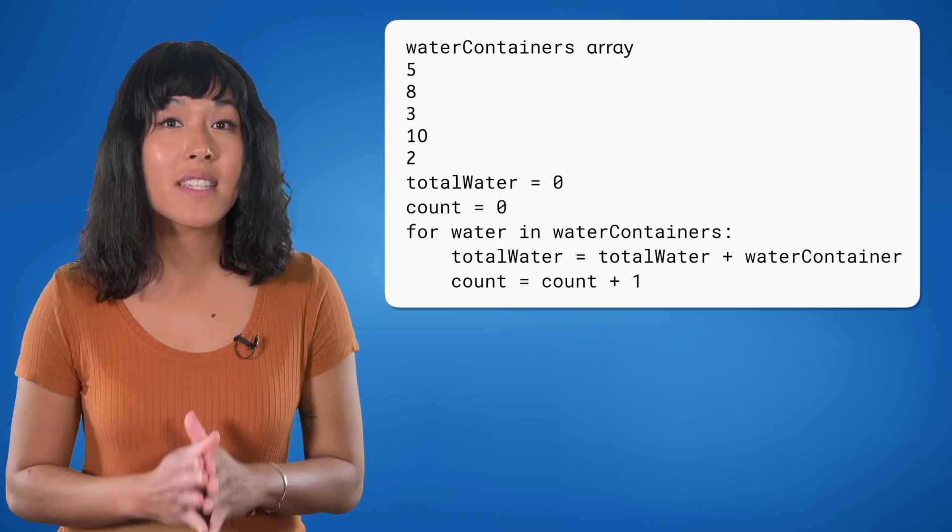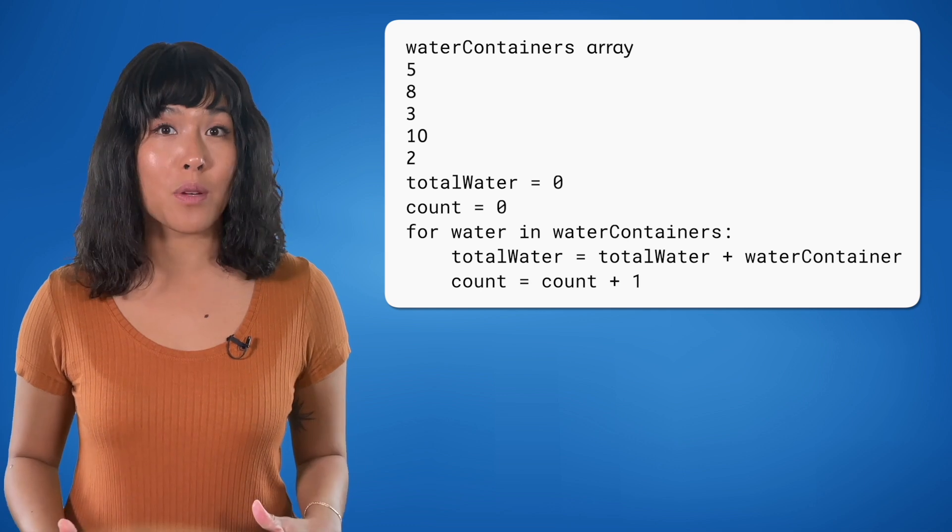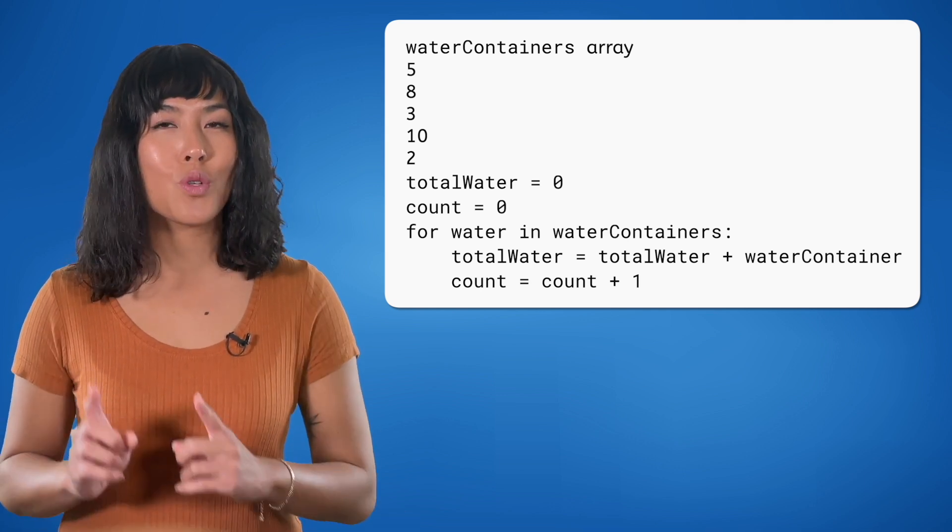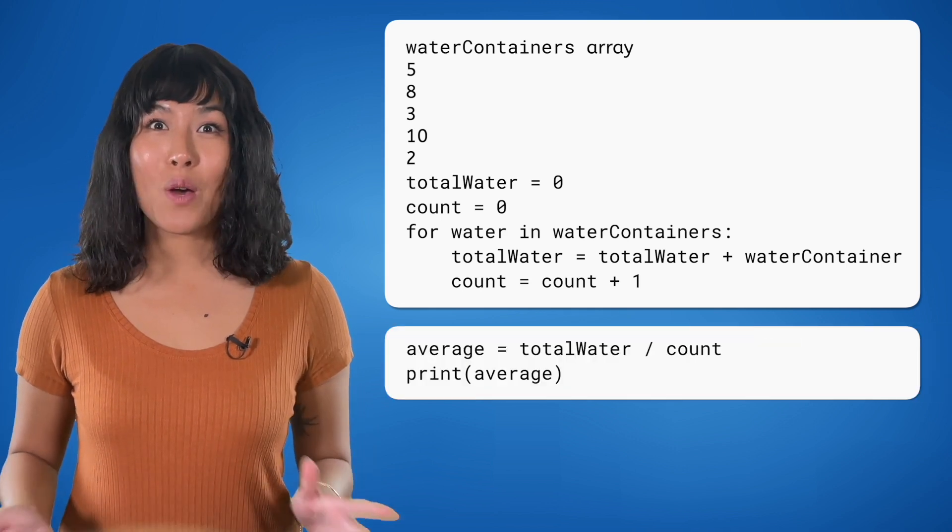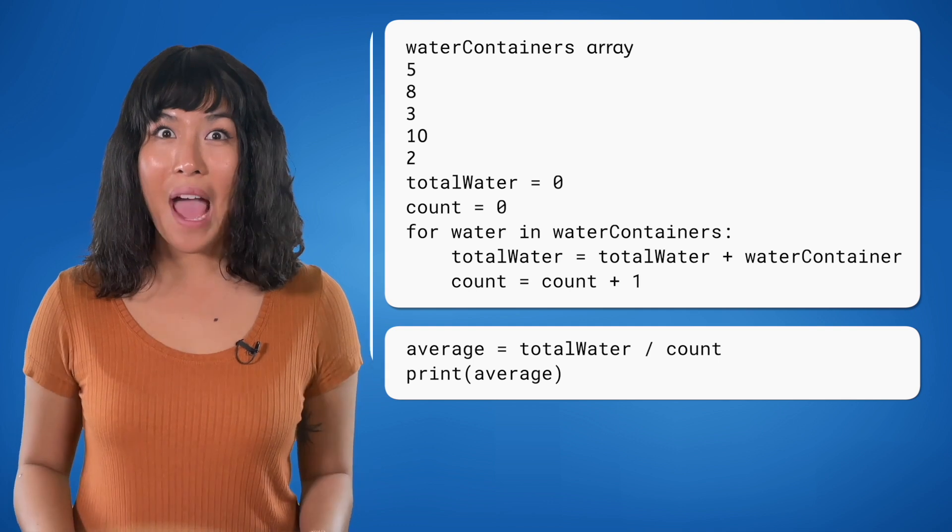We will start with the same code we had before. This time we will introduce another variable to count how many containers we have. Let's call it count and set it to zero. Next, when our loop is over, we will divide the total water by the count variable to get the average.